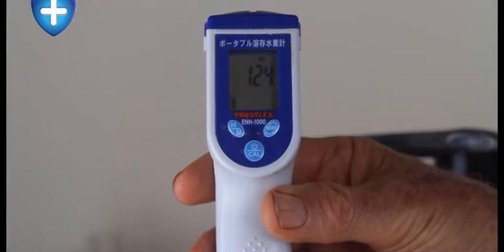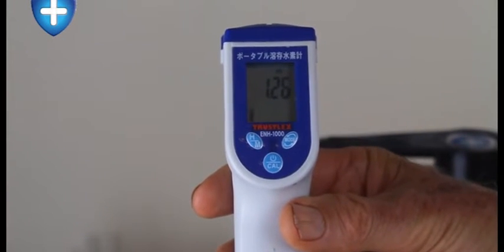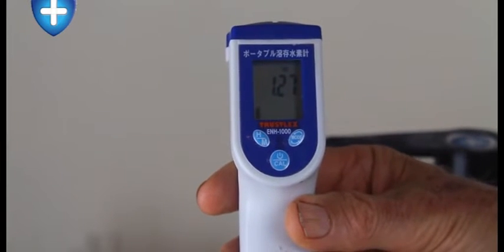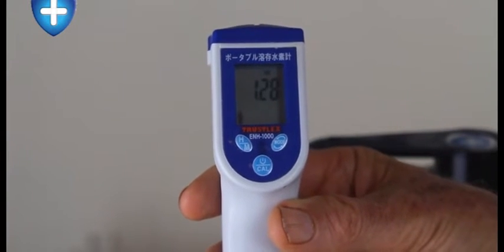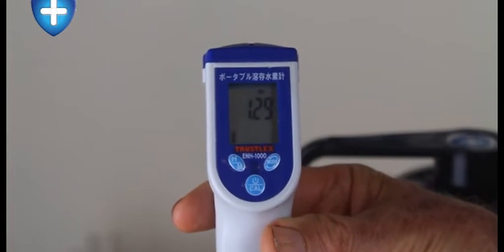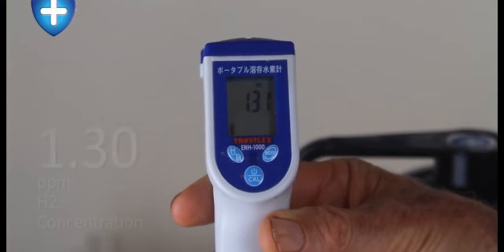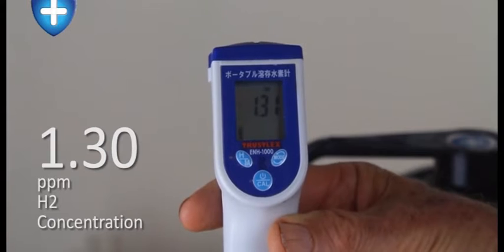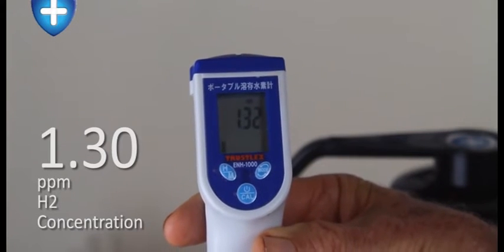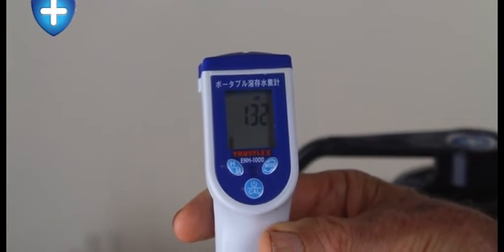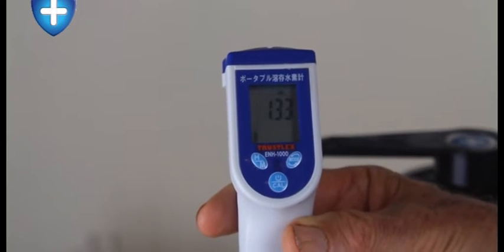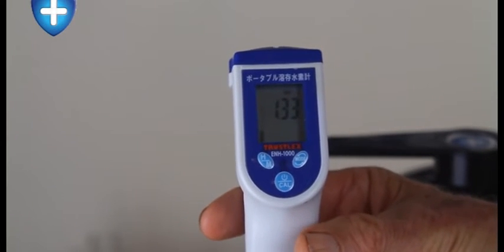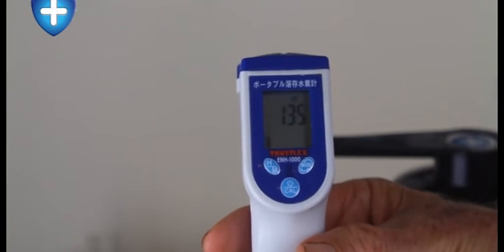There is a theoretical maximum for molecular hydrogen in the open area, in a glass like this, of 1.6. We're going to go to 1.3 here. I think 1.29, 1.32, 1.31, 1.38. That's fantastic. That is more than four times the molecular hydrogen of a $4,000 electric ionizer.